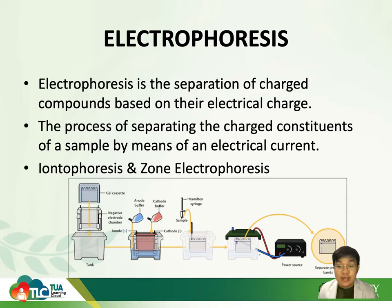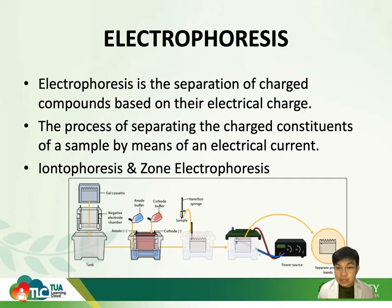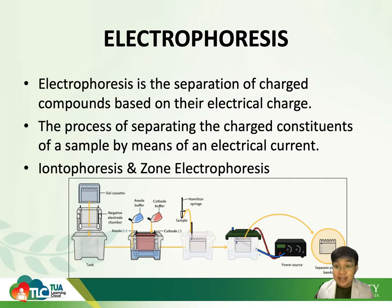Electrophoresis is the separation of charged compounds based on their electrical charge. You have a particular solution with different molecules in it, and these molecules have their own charges — whether positively or negatively charged, whether they are cations or anions. They will migrate through our medium and be separated according to their charges. Electrophoresis is also defined as the process of separating charged constituents through the use of electrical current.